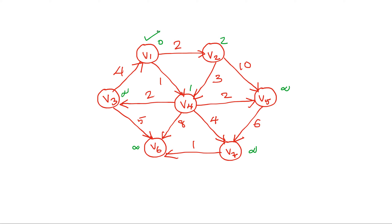We now check for the smallest distance among unknown vertices. V4 has the smallest distance of 1, so we mark it as known. From v4 we calculate distances to its neighbors: v3 gets 1+2=3, v6 gets 1+8=9, v7 gets 1+4=5, and v5 gets 1+2=3.